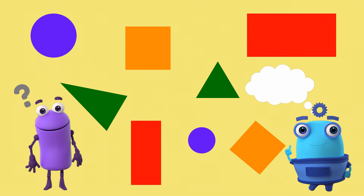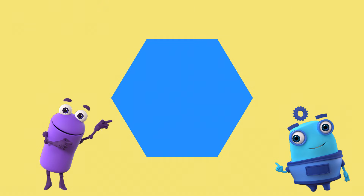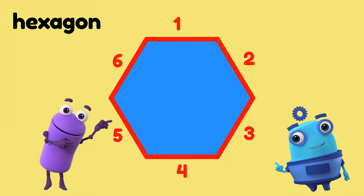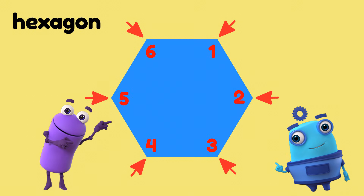One way is to look at how many sides it has. This shape is called a hexagon. It has six sides and six vertices. That's just a fancy name for corners.